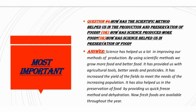Question number four, and this is again the most important question: how has the scientific method helped us in the production and preservation of foods — کھانے کی پیداوار میں اور اس کو محفوظ کرنے میں سائنسی طریقہ کار نے کیسے ہماری مدد کی ہے? The answer is: science has helped us a lot in improving our methods of production — کھانے کی پیداوار کے methods کو improve کرنے میں۔